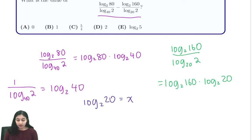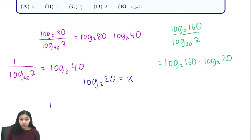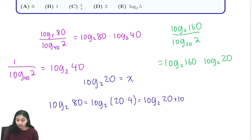Now let's rewrite our expression with this knowledge. Log base 2 of 80 is equal to log base 2 of 20 times 4. And from our logarithmic rules, this is just equal to log base 2 of 20 plus log base 2 of 4, which is just x plus 2, since we know that this expression is x and 4 is 2 squared.